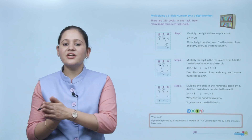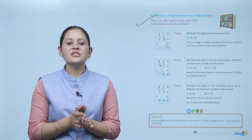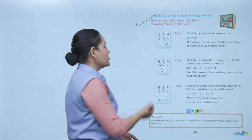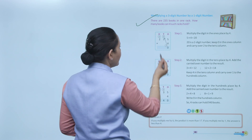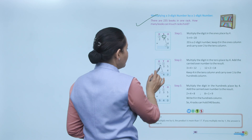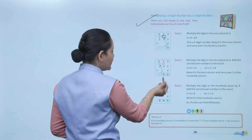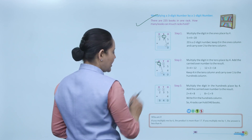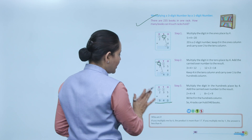Next: multiply a three-digit number by a one-digit number. There are 235 books in one rack. How many books can 4 such racks hold? Multiply 235 by 4. Step 1: 5 into 4 equals 20; write 0 under ones and carry over 2. Step 2: 3 into 4 equals 12, plus 2 carry over equals 14; write 4 under tens and carry over 1. Step 3: 2 into 4 equals 8, plus 1 carry over equals 9; write 9 under hundreds. So 4 racks hold 940 books.